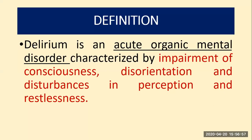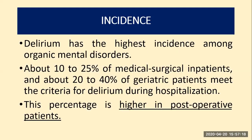The person suffering with delirium always has impairment of consciousness. As we saw in dementia, there was no disturbance of consciousness. But in delirium, there is impairment of consciousness, disorientation, and disturbance in perception as well as restlessness. That is the definition of delirium.